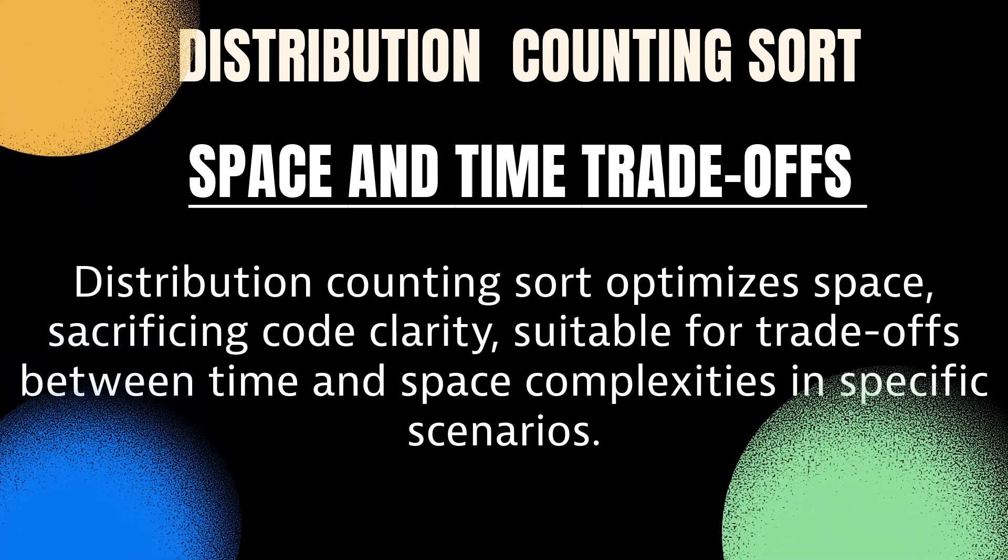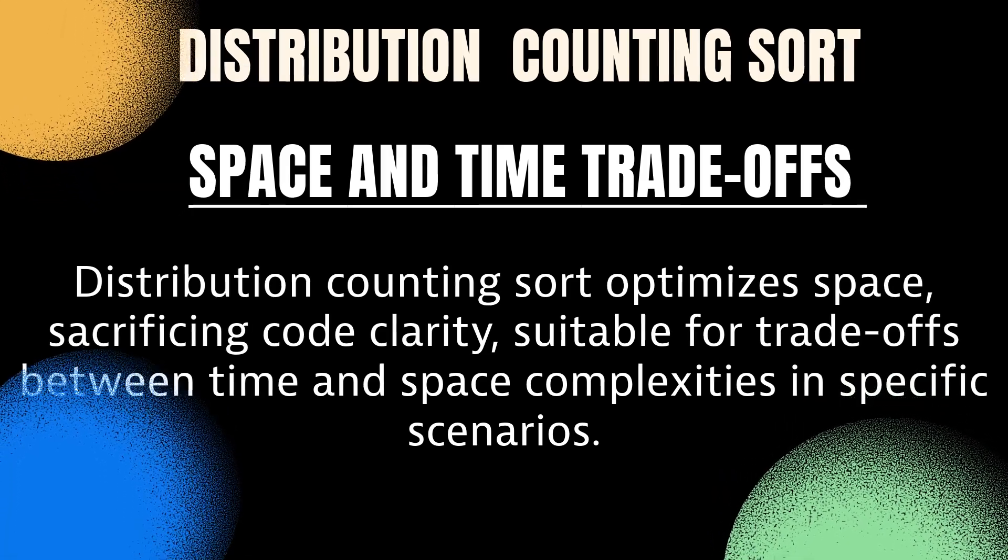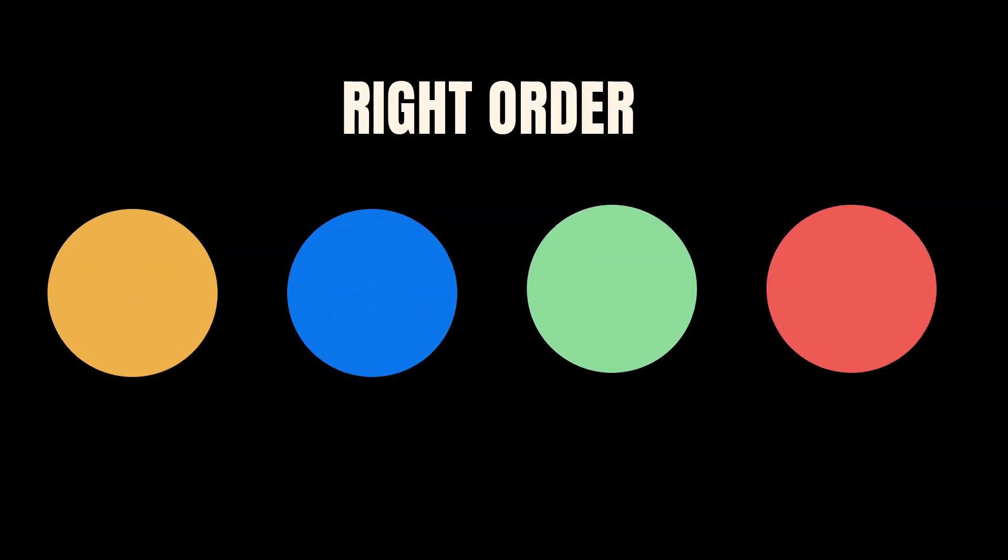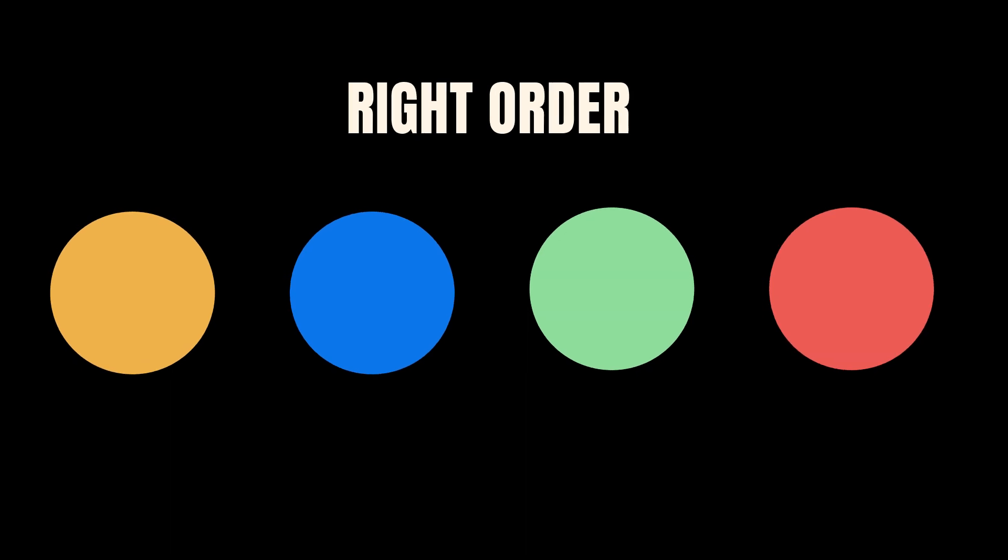Let me give you an example. As you can see here, we have different numbers of boards with different colors, and the right order of the colors are orange, blue, green, and red. This is the initial state of the order and this is the goal state that we're trying to reach.